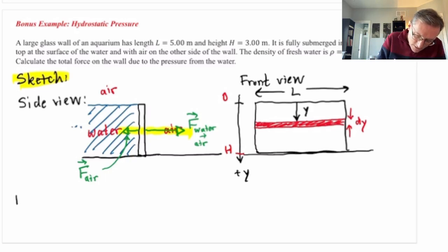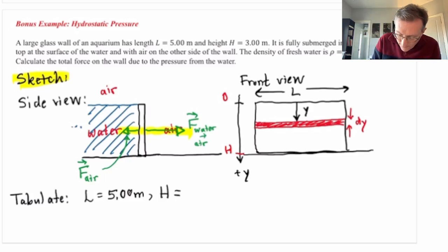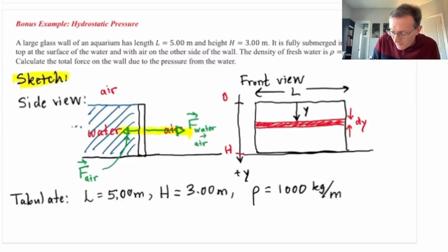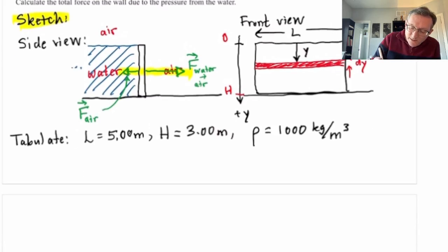Now, part of our problem solving approach is to draw a sketch. That's the first S in STEMS. Then there's a T in STEMS. T stands for tabulate. What are we given? Well, we know the length L of the glass wall, five meters. The height H, three meters. And we know the density rho of the fresh water used to fill this tank, 1,000 kg per meter cubed. So that's tabulating what we know.